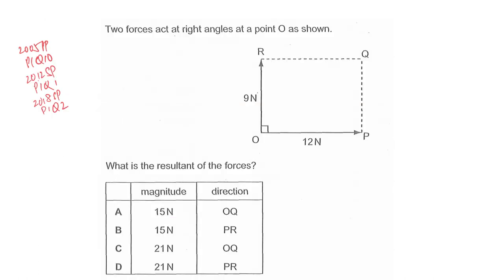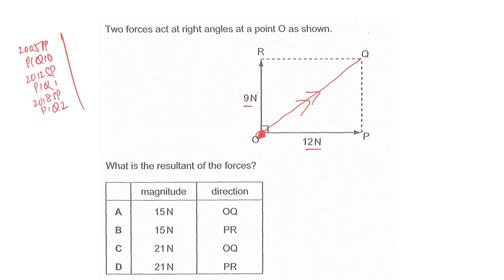This type of question appears in various Pure Physics and Combined Physics papers. You have two forces acting at point O: 9 Newton and 12 Newton, 90 degrees apart. The resultant force will be somewhere diagonally — imagine two people pulling you in the directions of OR and OP respectively. Since it's 90 degrees, you can use the Pythagorean theorem: square root of 9 squared plus 12 squared.